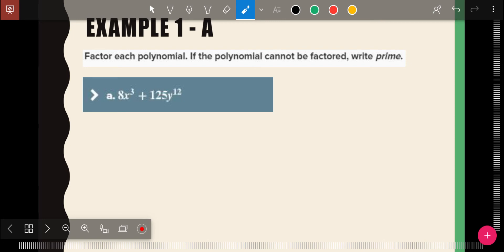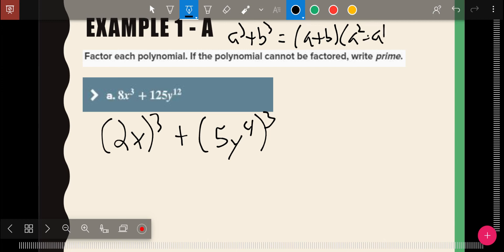Here, 8 breaks down to 2x to the third, plus 125 breaks down to 5y, no, 12th. So it's going to be 4, because 4 times 3 makes 12th. And so then using that rule, going back, my rule is a cubed plus b cubed equals a plus b a squared minus a b plus b squared. That's why you need to have it written down, because I don't expect you to have it memorized. So a is 2x, b is 5y to the fourth. So 2x plus 5y to the fourth. And then a squared, 2x times 2x is 4x squared minus a b times these two together, 10xy to the fourth, plus b squared. 5 times 5 is 25. y to the fourth times y to the fourth is y to the eighth.